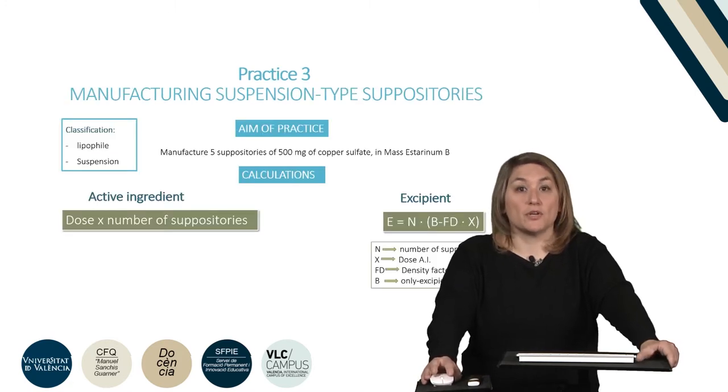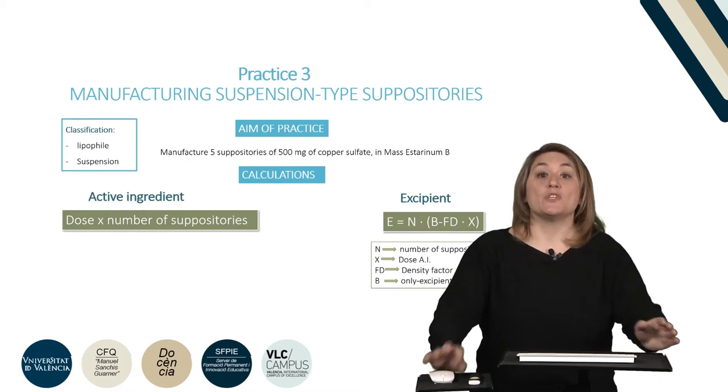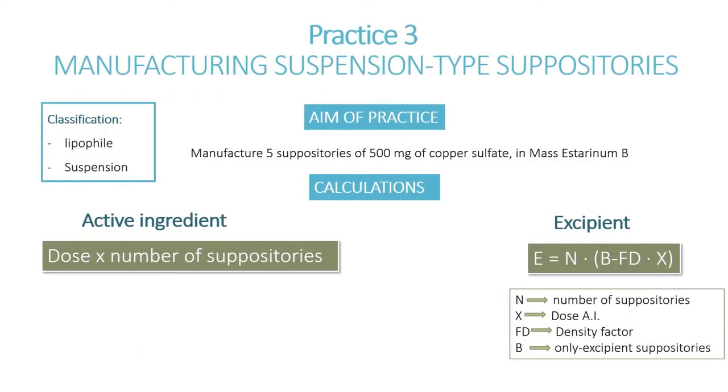Once the density factor has been calculated, we can proceed to the elaboration of our definitive suppositories, in which the active ingredient must be homogeneously distributed in the volume of each cell, and therefore they should present a uniform coloration. First, it is necessary to perform the calculation in order to find out how much excipient and active ingredient we need to make our batch of suppositories. The aim of this practice is to prepare a batch of five suppositories. So, in order to have enough mass for overfilling properly, calculations will be performed to prepare six suppositories as shown on the slide.